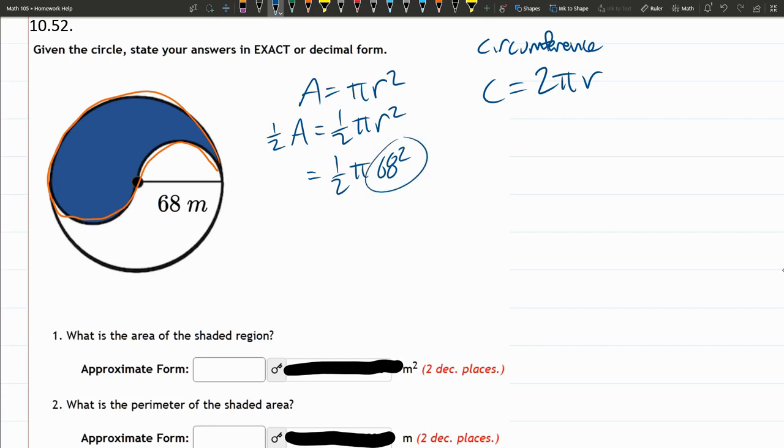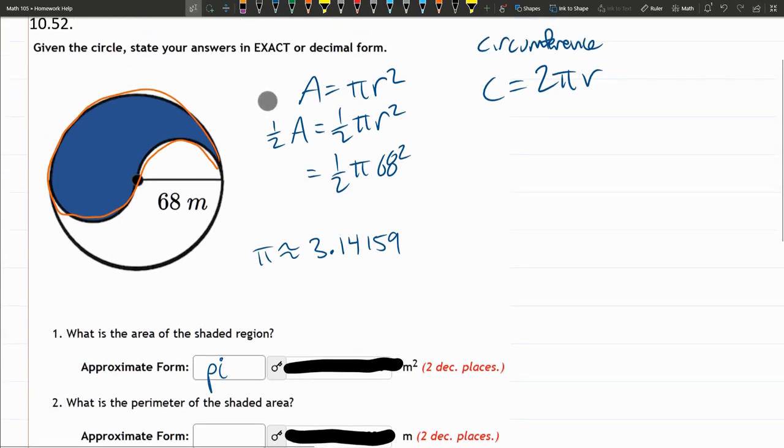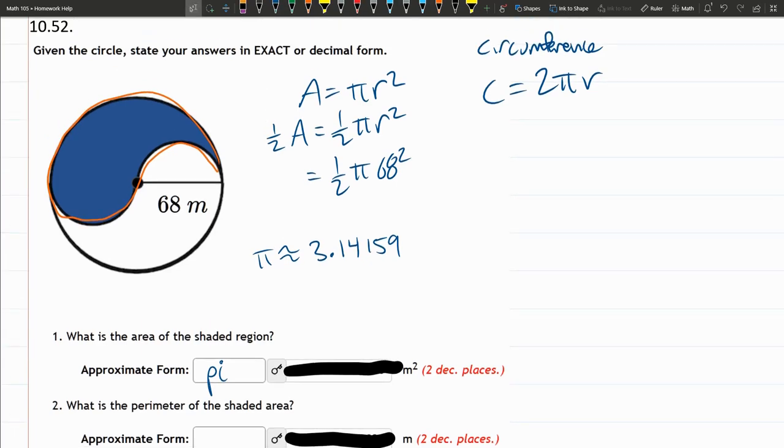But do make sure you square the 68 before you multiply by pi and by one-half. This question wants two decimal places. So if you want to use the exact, I believe you use pi for the number pi, or you can use the approximation 3.14159. That should be enough decimal accuracy to get this question right.